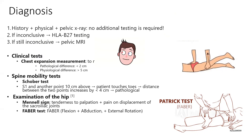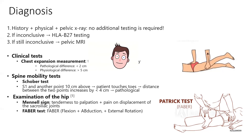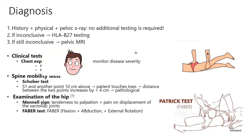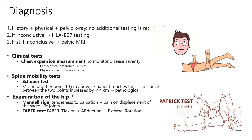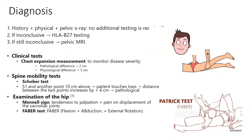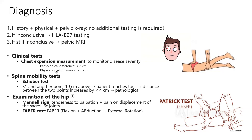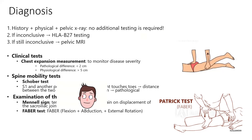If X-rays are not diagnostic, we move on to testing HLA-B27 — a blood test for a specific antigen associated with this disease. If that's still non-conclusive, a pelvic MRI is the last resort to visualize inflammation, commonly in the sacroiliac joint.